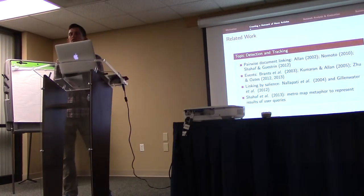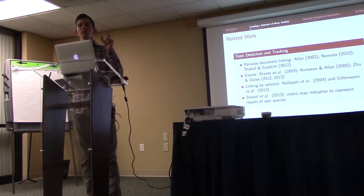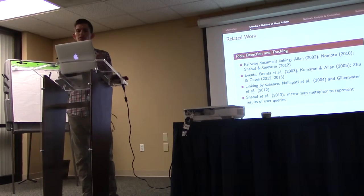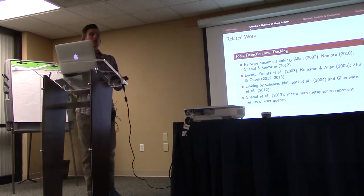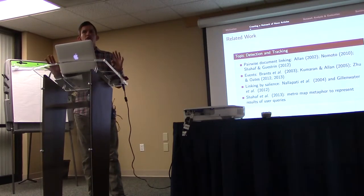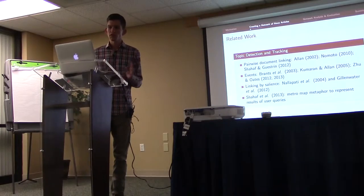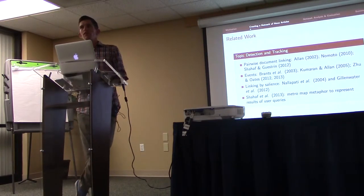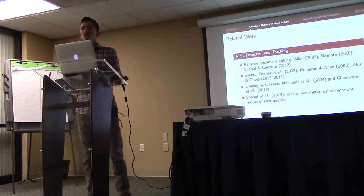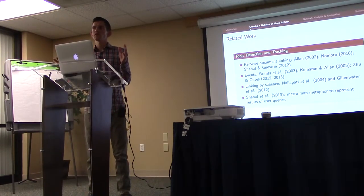Our work is mostly related to research in the area of topic detection and tracking, dating back to early work mostly concerned with finding out for pairs of documents whether they describe or talk about the same event. There is also work that deals with extracting events from text and then clustering articles based on those events. Although these approaches have the problem that they focus on very specific genres — sports events, political events, and others — while our approach uses an entire document collection of news articles, neglecting genre. There is also quite a lot of work on salience-based methods and document similarity-based methods, which we'll show are not ideal for document linking when considering evolving story threads.